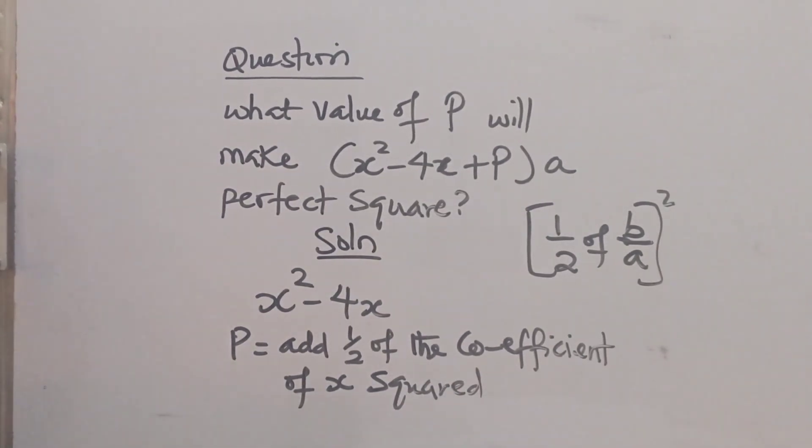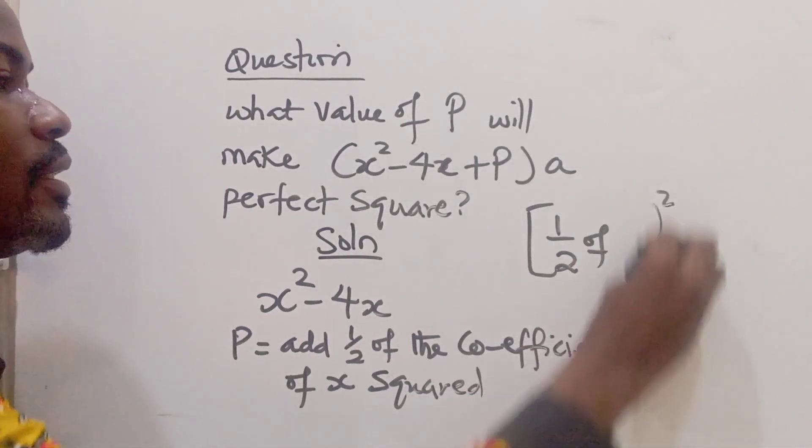So that's what p represents. So the coefficient of x is what? Minus 4, okay?